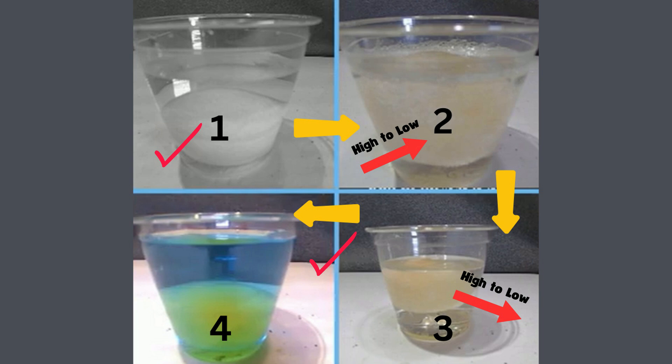Finally, in picture four, the egg is placed in distilled water, which has a very high concentration of water, and the egg expands again because water flows from high concentration outside the egg to the low concentration inside the egg, causing the egg to expand.